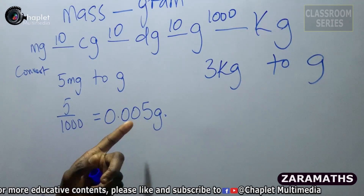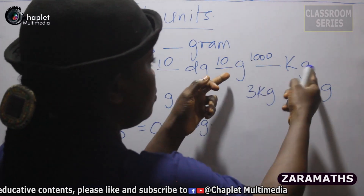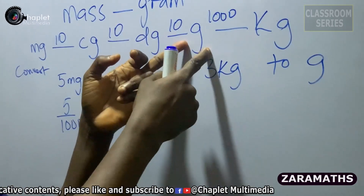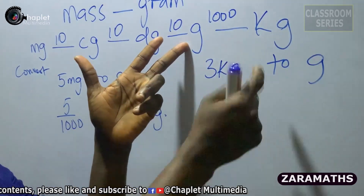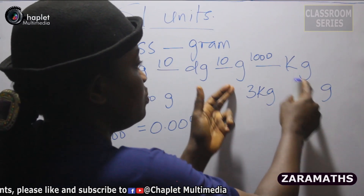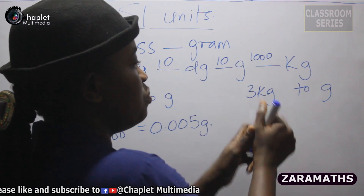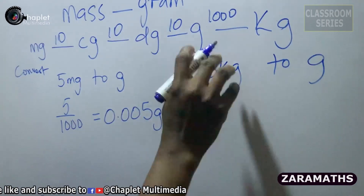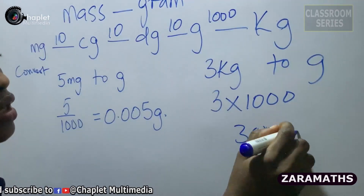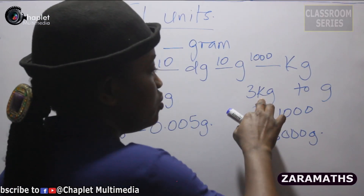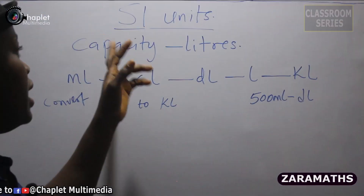So 5 milligrams is the same as 0.005 grams. Now, 3 kilograms to grams: from kilograms to grams you are moving backwards, so we multiply. Since 1000 grams makes 1 kilogram, we multiply 3 by 1000, giving us 3000 grams. So 3 kilograms is 3000 grams.